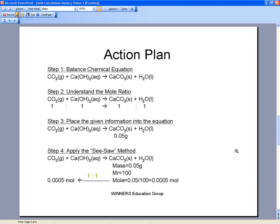Using the see-saw method, tracking back, we will know that one mole of calcium carbonate precipitate is formed from one mole of carbon dioxide as a reactant. This means that 0.0005 mole of CaCO3 is formed from 0.0005 mole of CO2.